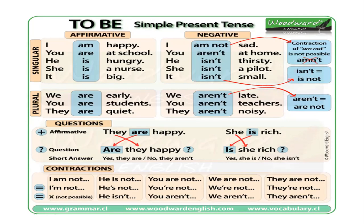When I want to change affirmative sentences into questions, I move the verb to be to the beginning of the sentence. My affirmative sentence was 'they are happy' — the question is 'are they happy?' And I have only two possible choices: affirmative and negative short answers. For example, yes they are, or no they aren't. For singular: she is rich becomes — is she rich? Yes she is, or no she isn't.